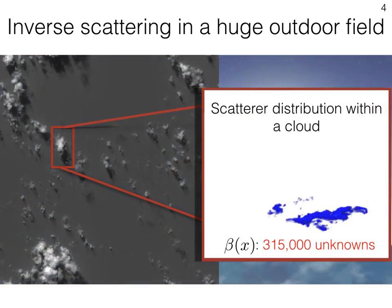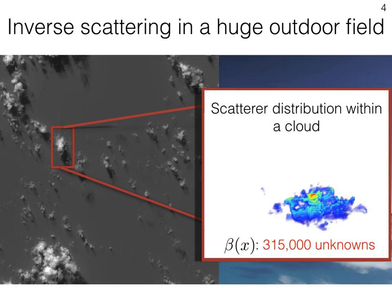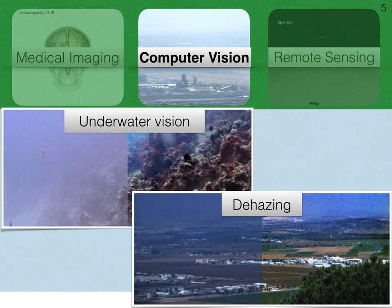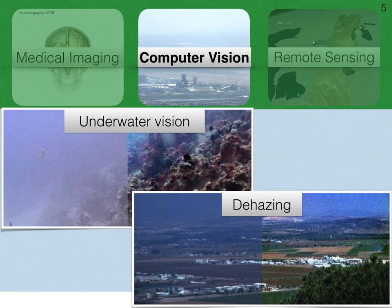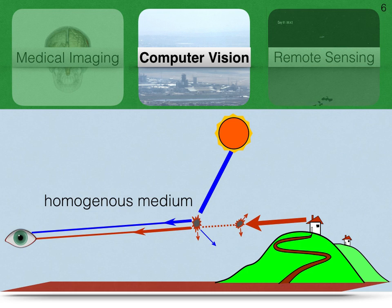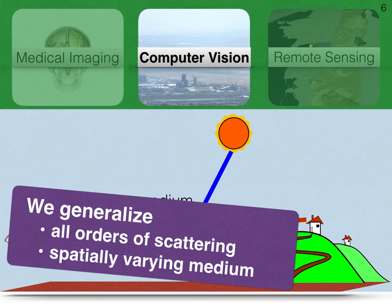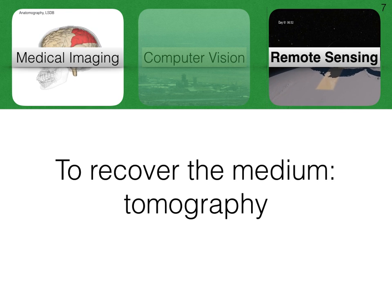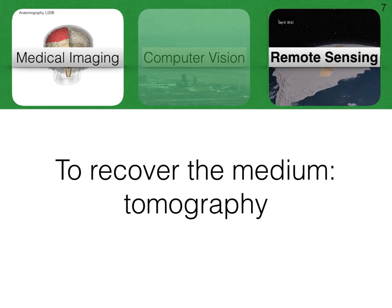With these images we recover the scatterer distribution within a cloud. Now let's put this problem into context with respect to three imaging fields: medical imaging, computer vision, and remote sensing. Computer vision typically looked for recovery of background objects or scenes, assuming single scattering in a homogeneous medium. We deal with a more general problem, accounting for all orders of scattering to recover a spatially varying medium. Often it's the medium itself that is important, and this is the case for tomography.